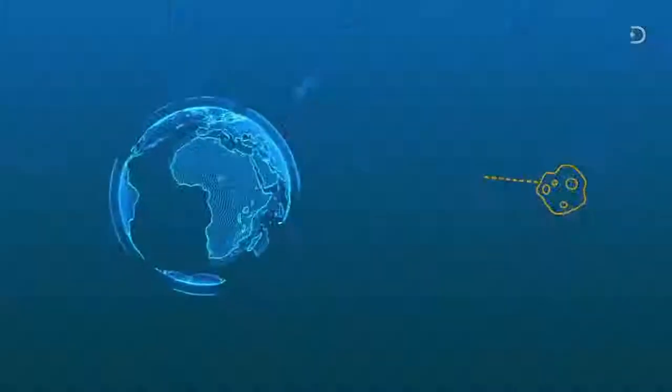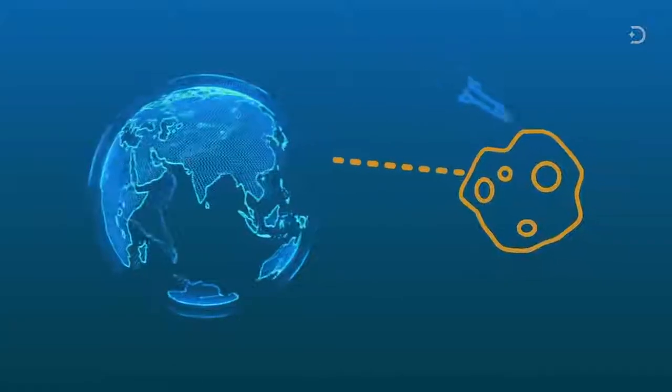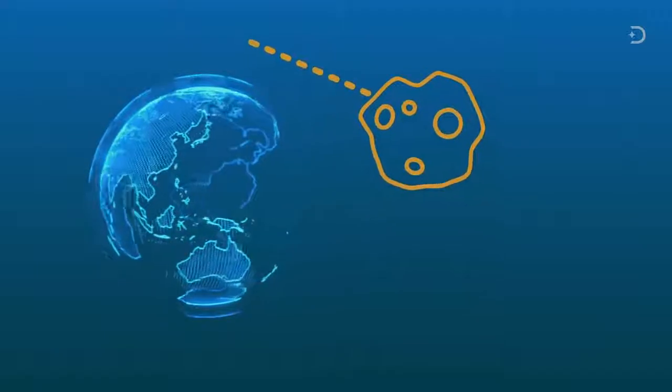However, if we did have a warning, there might be little we could do about it. Deflecting an asteroid would have to be the first methods attempted if a giant space rock was discovered to be on a collision course with Earth.